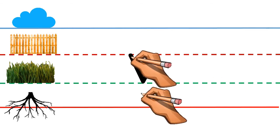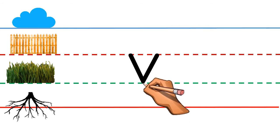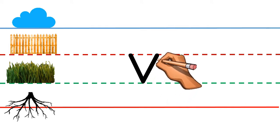Put your pencil on the fence line. Make a slant line and touch the grass line. Now go up while making a slant line and touch the fence line again.